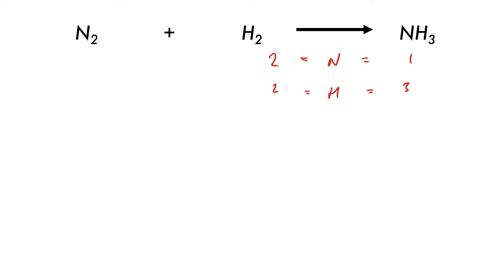So our products have odd numbers of each element, but on our reactant side we only have even numbers, two and two. So we must multiply the product side by two to get even numbers first of all. So we will make that two ammonias.